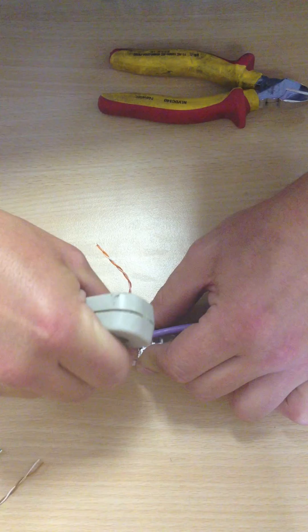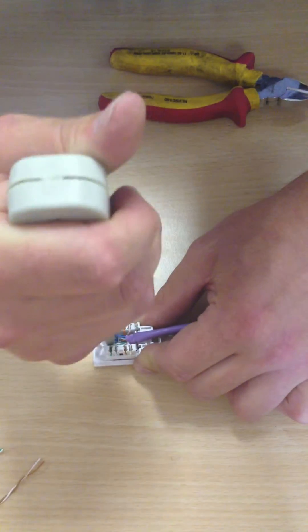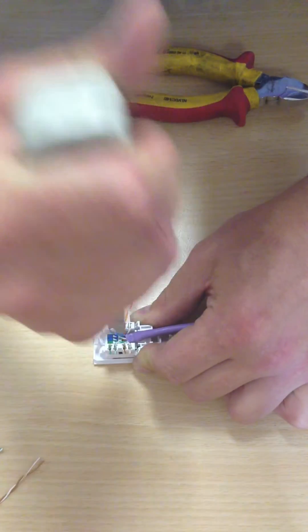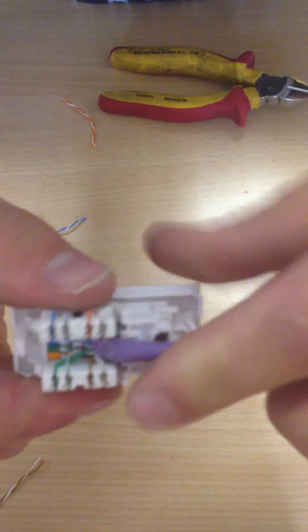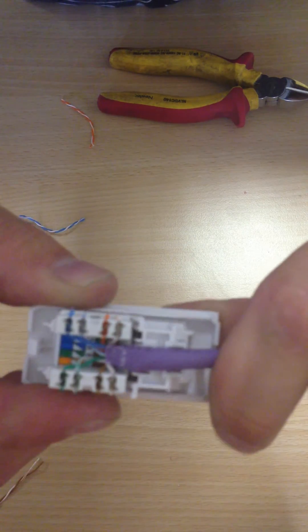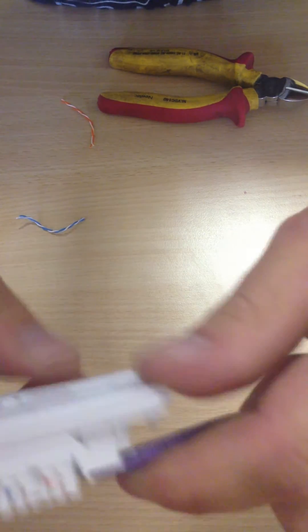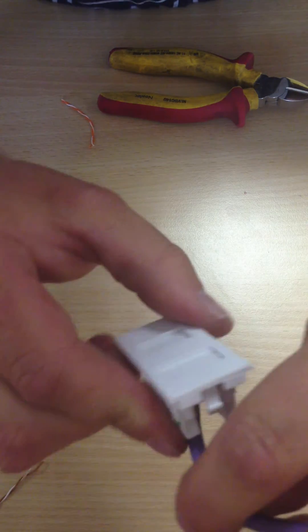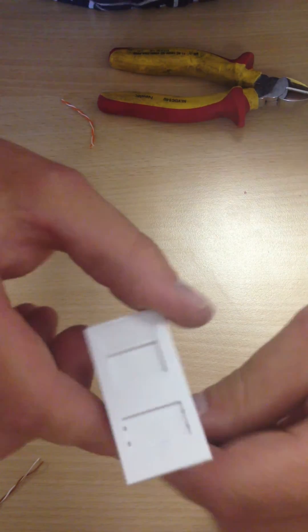That has not quite gone in so we will just redo that one. There we go. So it is nice and right to the point. There is no excess cable coiled up in there. That is fine. And then what you normally do is you clip that back into a face plate inside a back box. Thanks for watching.